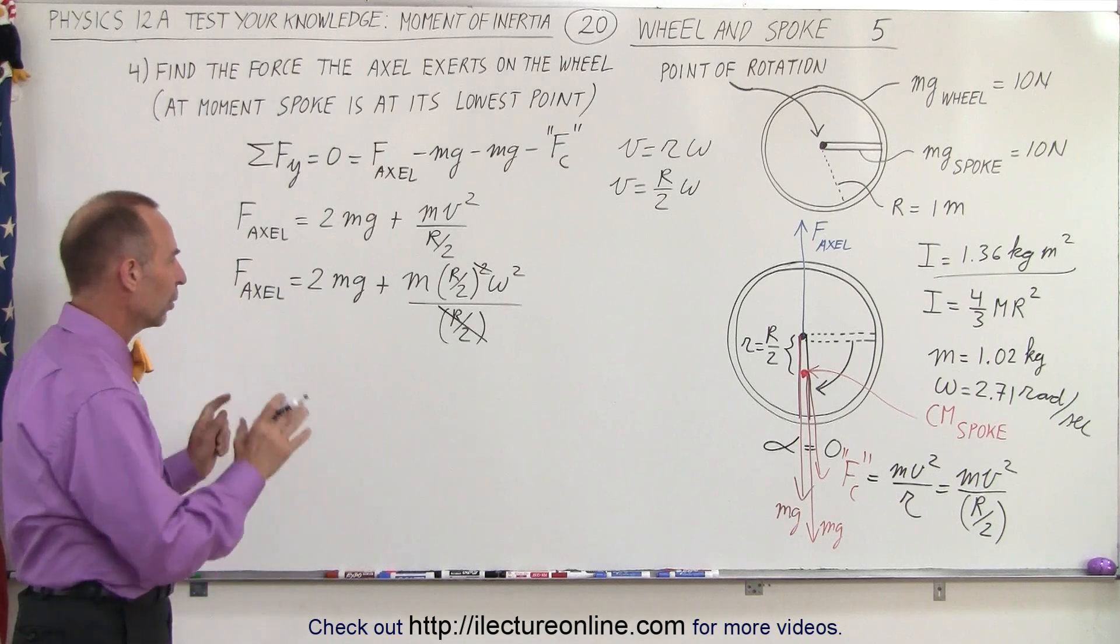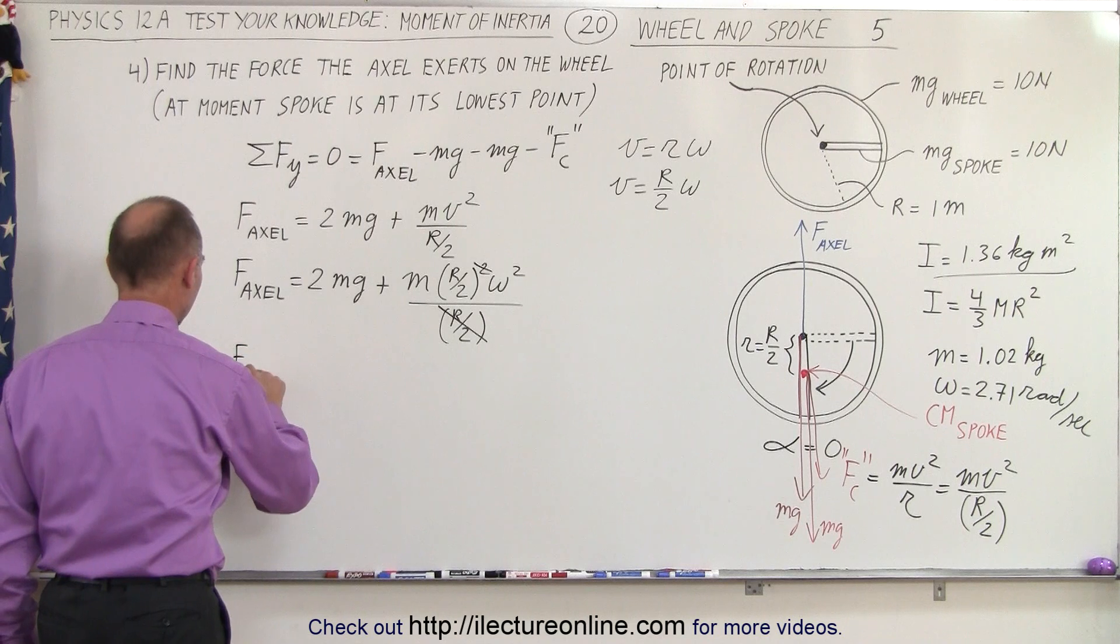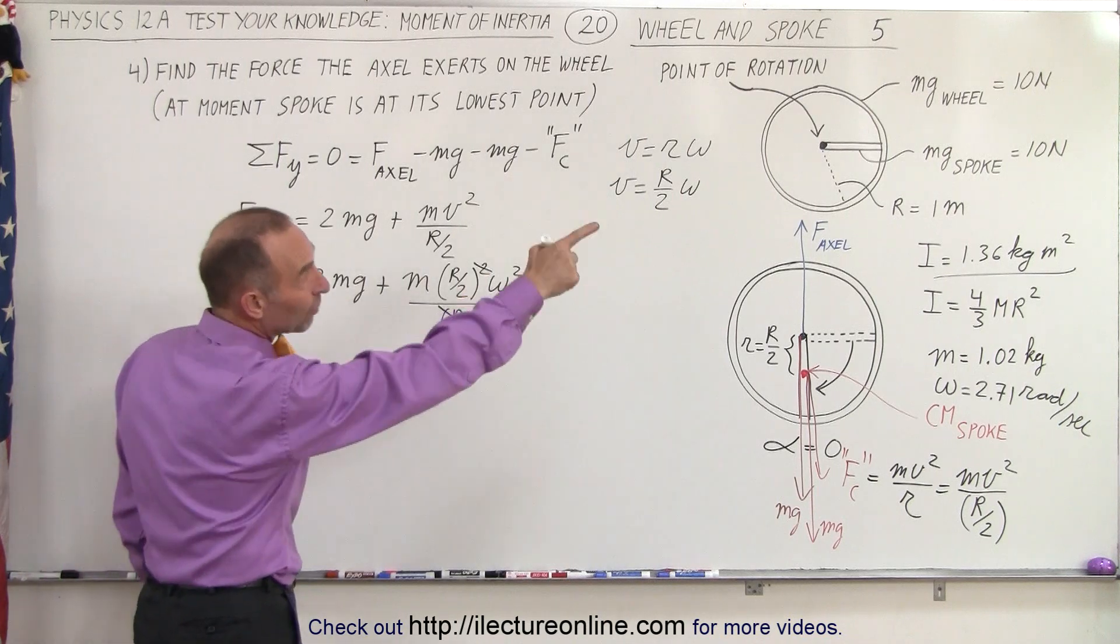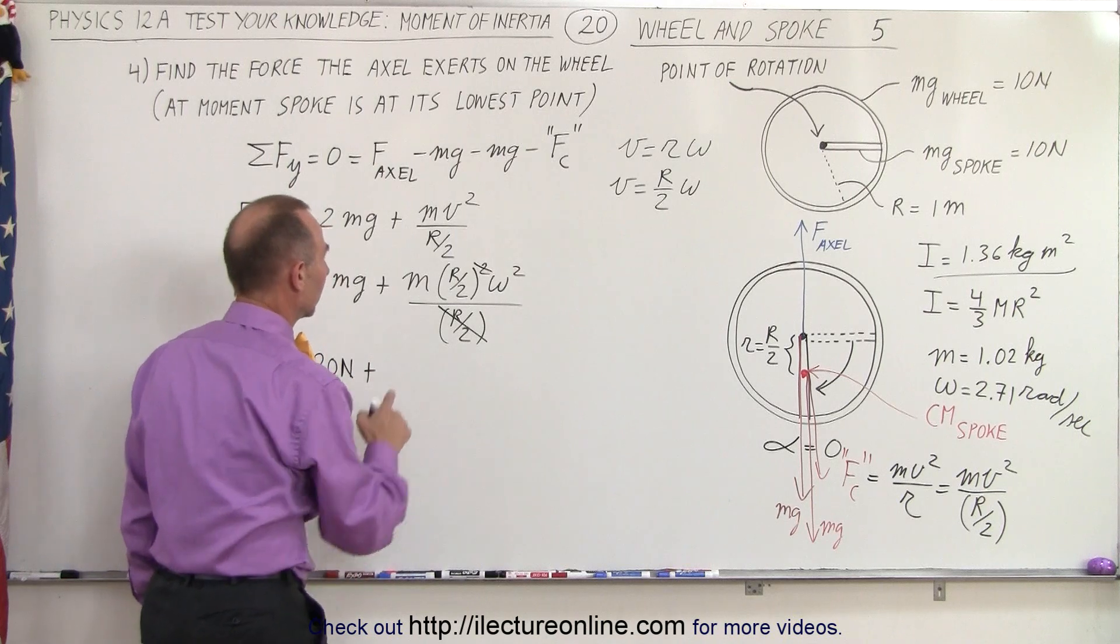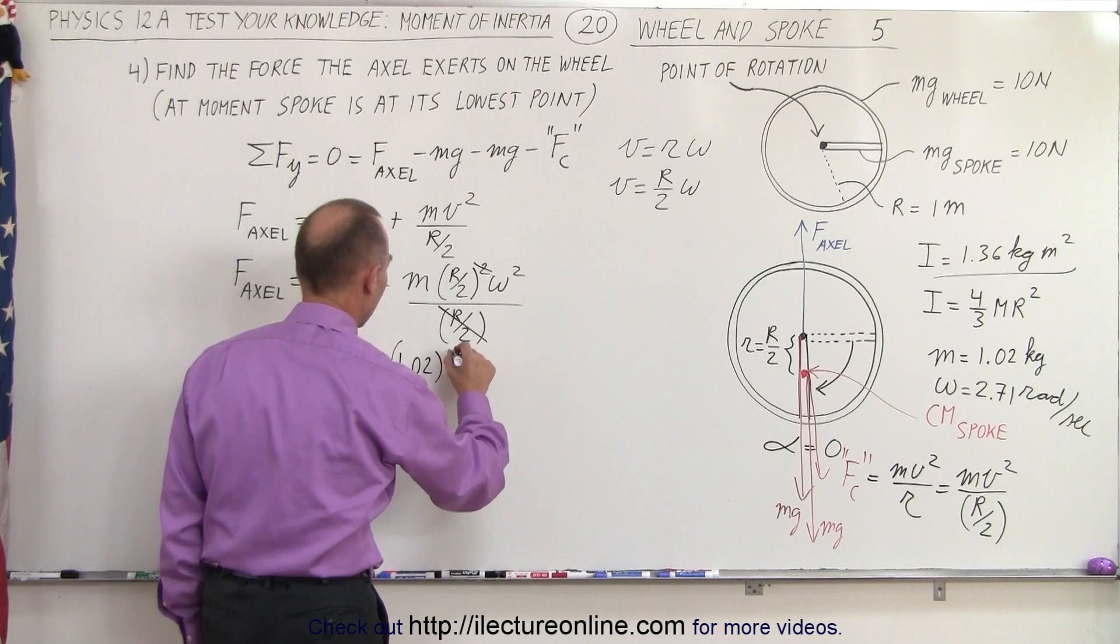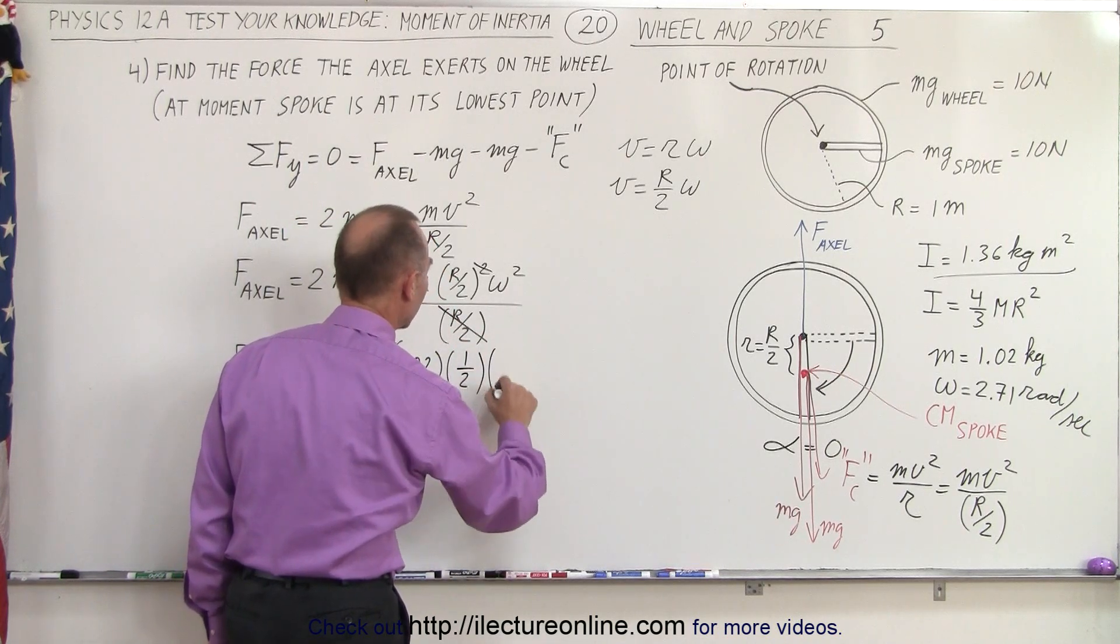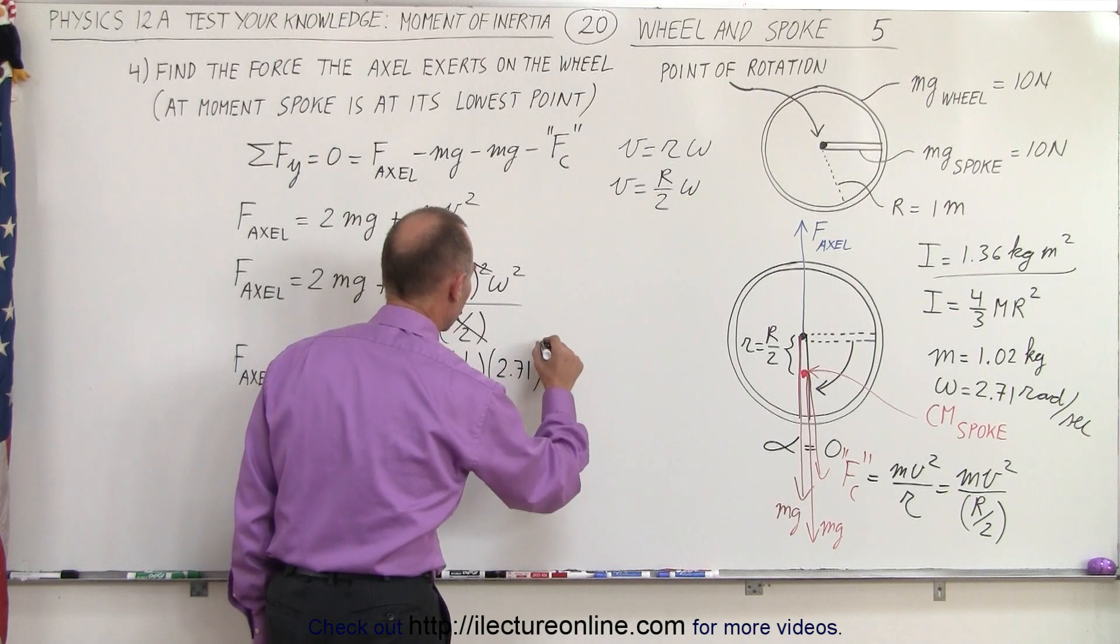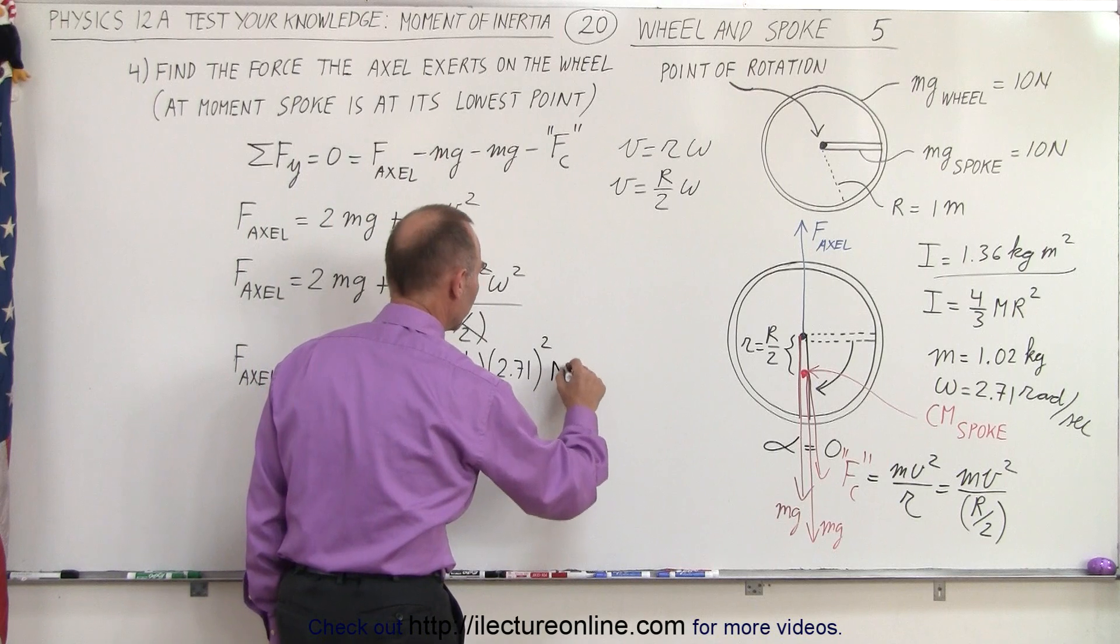I think now we're ready to plug in all the numbers to see what we get. So that gives us force of the axle is equal to 2 times mg—mg is 10 newtons, that would be 20 newtons—plus the mass, which is 1.02 kilograms, times the radius over 2, which is 1 meter divided by 2, that's half a meter, and omega would be 2.71 radians per second squared.